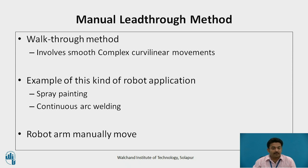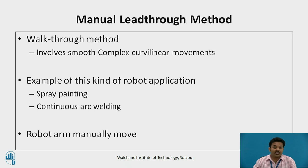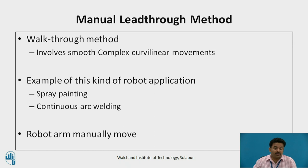The manual lead-through method, also sometimes called the walk-through method, is more readily used for continuous path programming where the motion cycle involves smooth complex curvilinear movements of the robot arm. The most common example of this kind of robot application is spray painting, in which the robot wrist with the spray painting gun attached as the end effector must execute a smooth regular motion pattern in order to apply the paint evenly over the entire surface to be coated. Continuous arc welding is another example in which continuous path programming is required, and this is sometimes accomplished with the manual lead-through method.